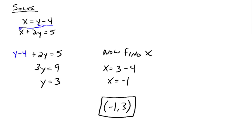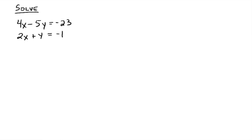Now let's move on to this one. The idea of the substitution method is we want to isolate a variable. On that first example, we had x already isolated, so we just took y minus 4 and substituted it into the other equation. This time, we need to actually isolate a variable. It does not matter which variable you isolate or from which equation. We could take the first equation and get x by itself, or get y by itself — either one works — and then substitute into the other equation.